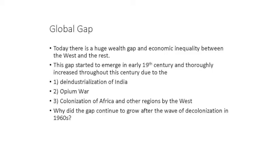We can discuss at least three important sources of this changing distribution of resources, and all of these are related to the Industrial Revolution, which emerged in the late 18th century. After the Industrial Revolution, Great Britain increased its economic and military capabilities. The revolution brought improvements in the textile industry, meaning Britain could produce higher volumes of goods at cheaper costs — yet Indian textiles were still seen as a competitive market.